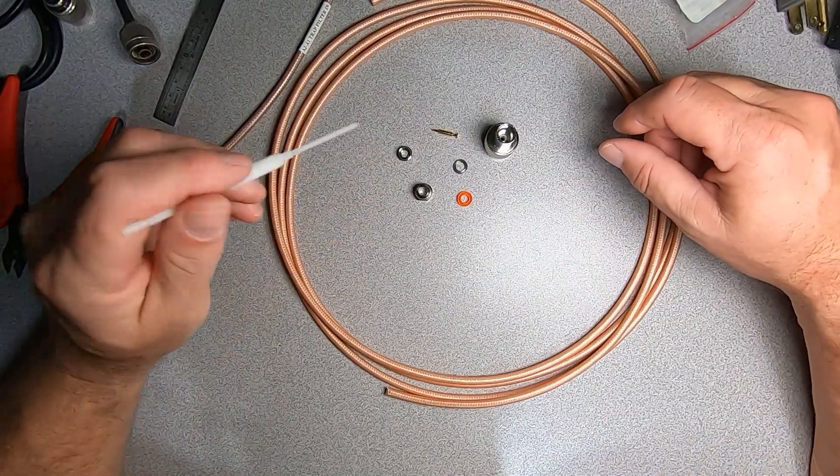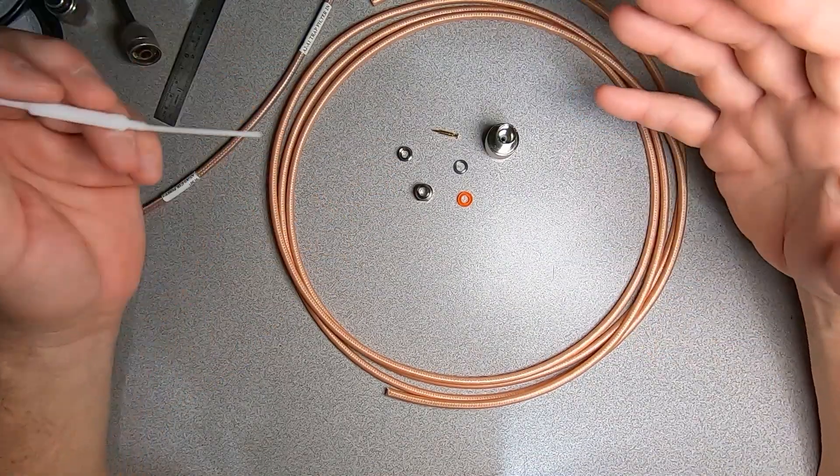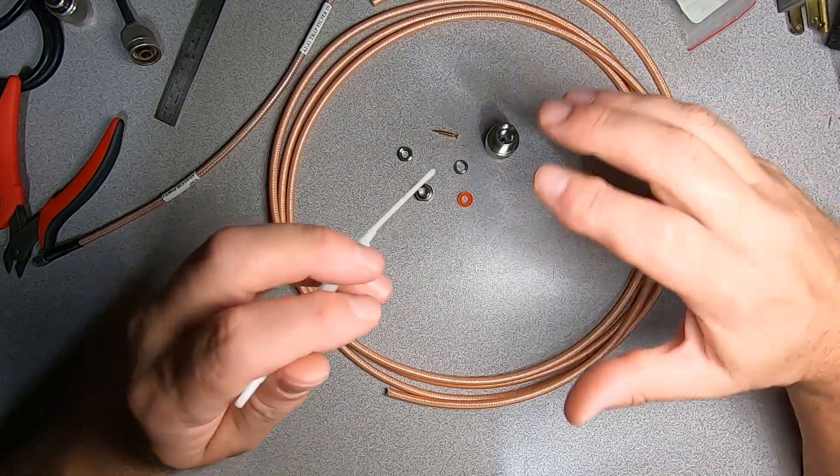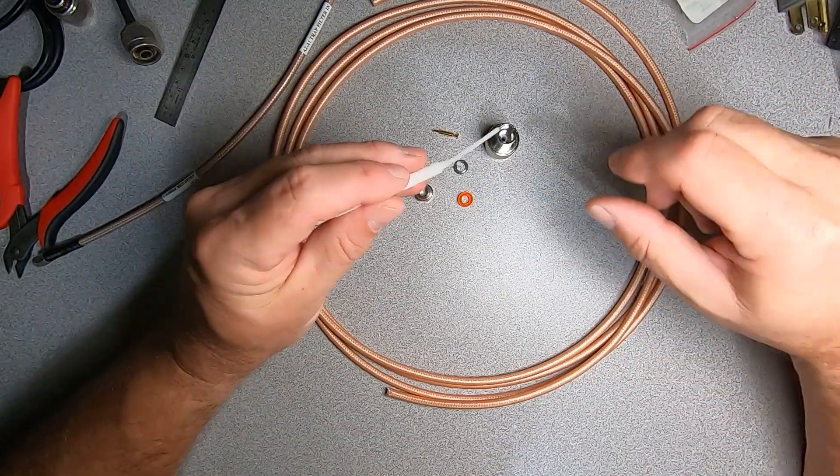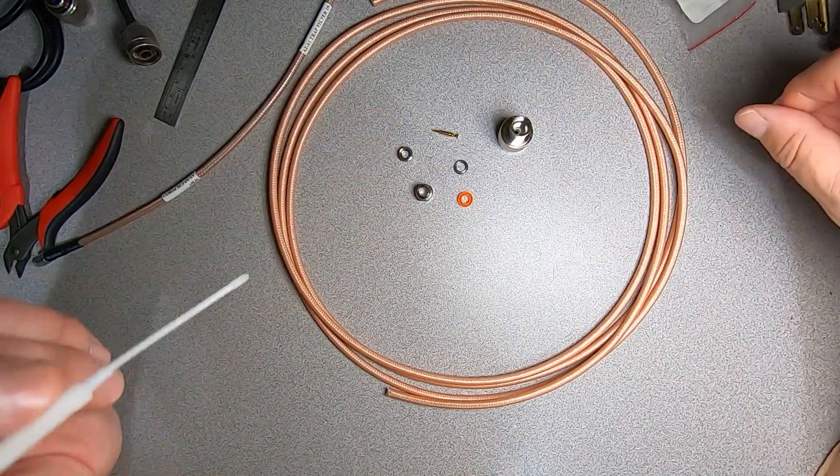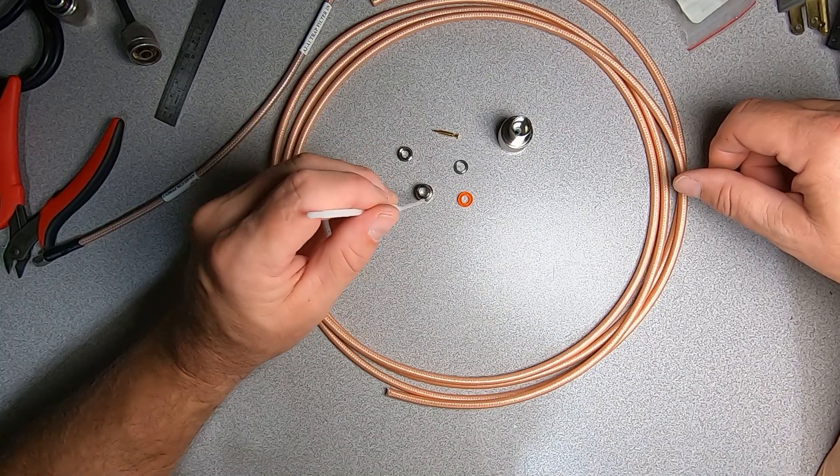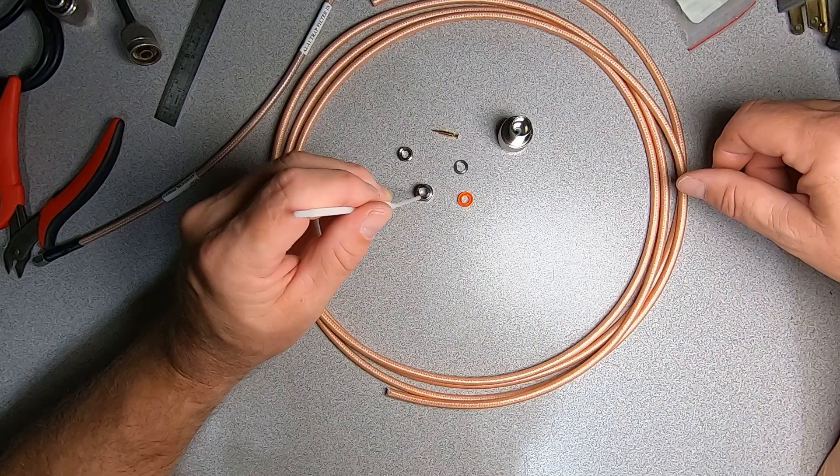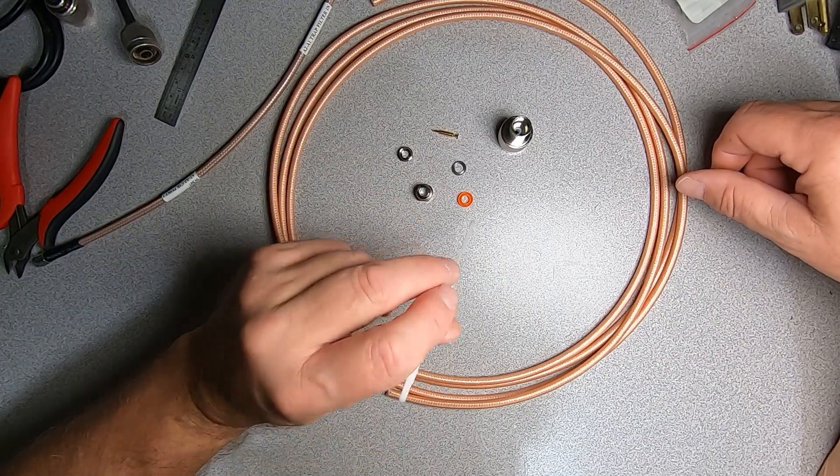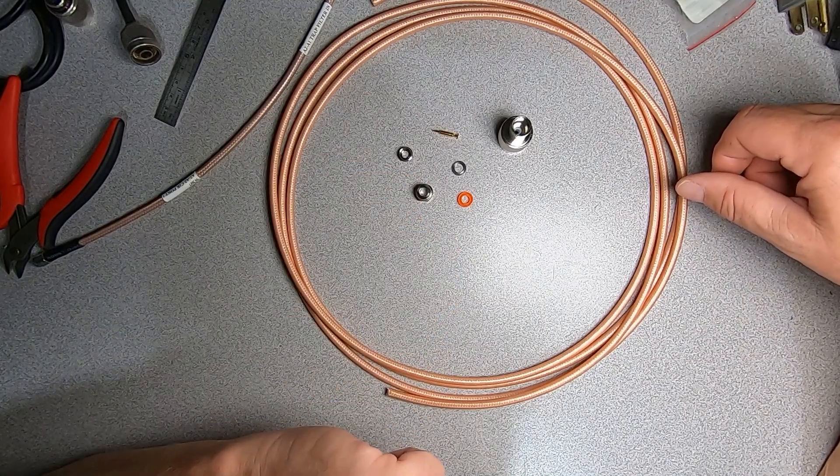When you're working with clamp-style RF connectors, typically you're going to end up with six components when you pull it out of the package. You have your connector body, your center pin, you have your clamp, you have your nut for the body, you have a washer, and you have a clamp gasket.